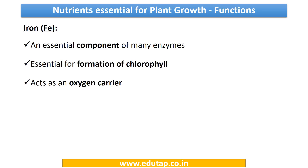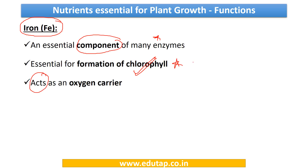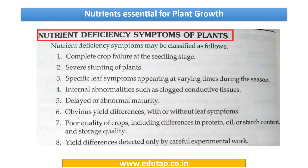Now we have come to iron. It is an essential component of many enzymes and is essential for the formation of chlorophyll — this point is very important, never forget it. It also acts as an oxygen carrier. So we are done with the functions of each of the micronutrients we were discussing.